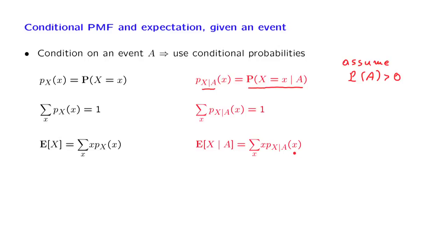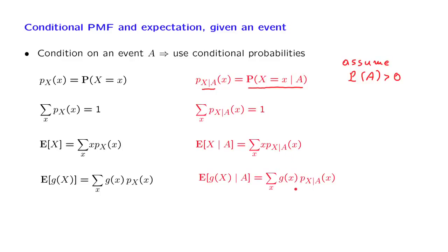As we discussed, a conditional probability model is just another probability model, except that it applies to a new situation. So any fact about probability models, any theorem that we derive, must remain true in the conditional model, except that in the conditional model we use conditional probabilities instead of the original probabilities. To summarize: conditional models and conditional PMFs are just like ordinary models and ordinary PMFs, except that probabilities are replaced throughout by conditional probabilities.